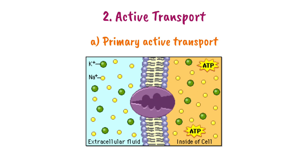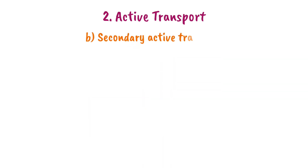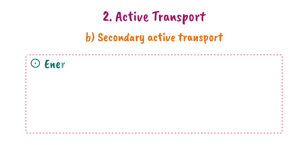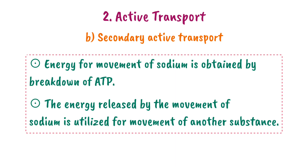In primary active transport, both energy and a carrier protein are required to move substances. The second type is secondary active transport. In secondary active transport, energy is not used directly from ATP. Instead, the energy from the movement of one substance is used indirectly to transport another substance — this is indirect energy transfer.